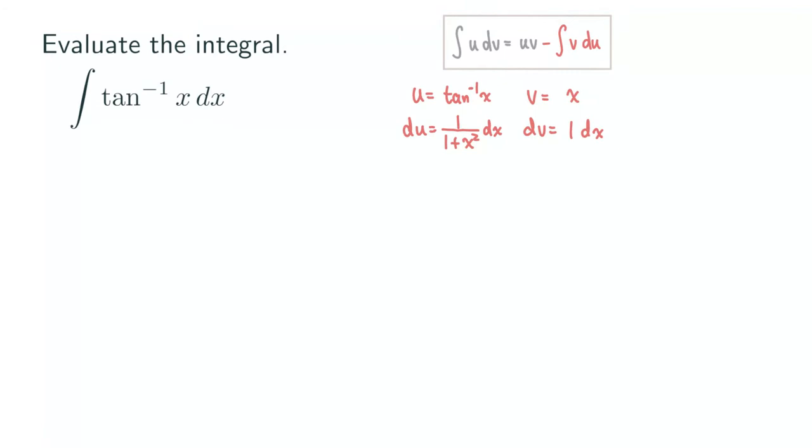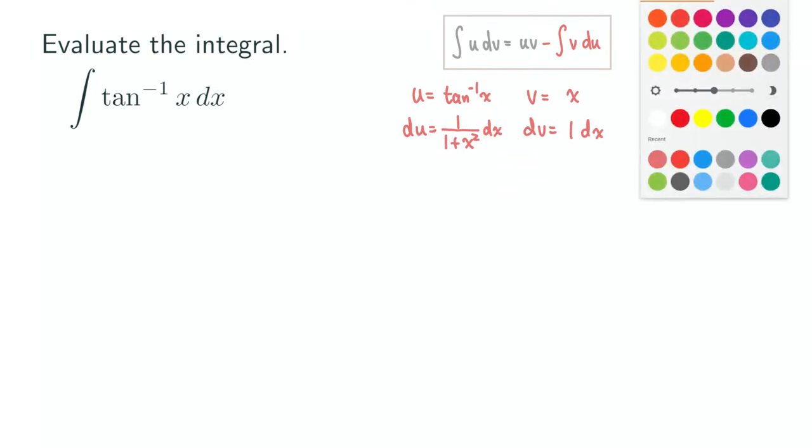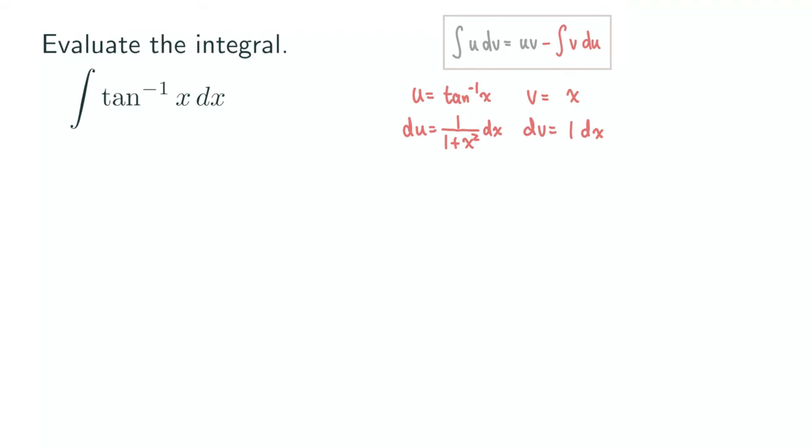And so it's important that in order for you to be able to do this problem, you need to remember the derivative for the tangent inverse of x. Otherwise, you would need to derive it first. And so we have 1 over 1 plus x squared here as the derivative of the arctangent function. Okay, so now we can start writing down our steps right here.